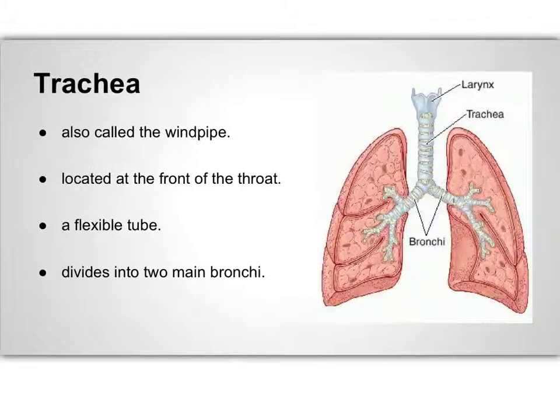The trachea, also called the windpipe, is located at the front of the throat near the esophagus. It is a very flexible tube so that we can move our head and neck while we breathe. The trachea is made of elastic tissues, which allows it to stay open during movement of the neck. The human trachea has a diameter of 25 millimeters and a length of 15 to 16 centimeters.